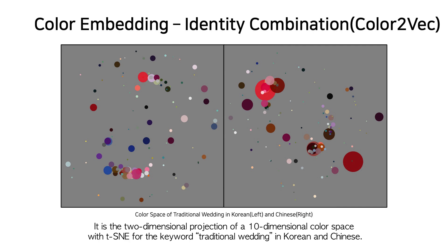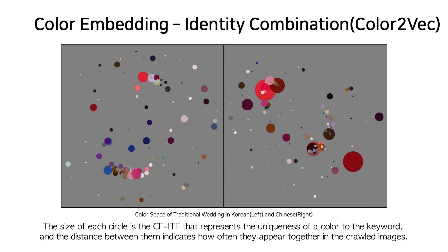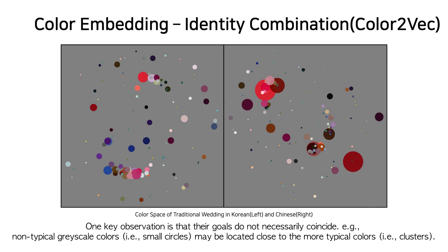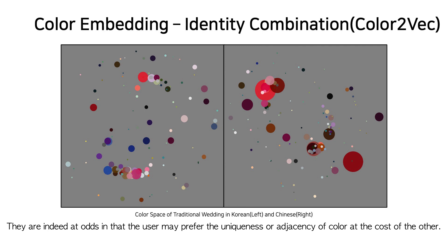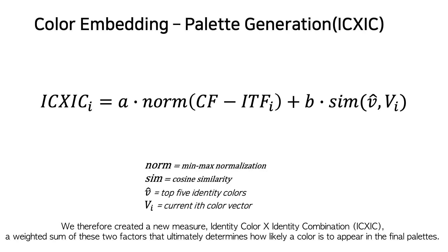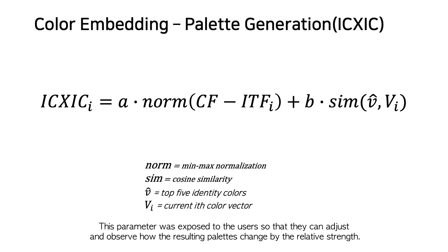One example of the resulting color space is shown in a figure — a two-dimensional projection of a 10-dimensional color space with t-SNE for the keyword 'traditional wedding' in Korean and Chinese. The size of each circle represents CF-IDF, indicating uniqueness of color to the keyword, and the distance between circles indicates how often they appear together in crawled images. Non-typical grayscale colors may be located close to more typical colors, and the user may prefer uniqueness or adjacency of color. We therefore created a new measure — identity-color × identity-combination — a weighted sum of these two factors that determines how likely a color is to appear in the final palette. This parameter is exposed to users so they can adjust and observe how resulting palettes change by relative strength.